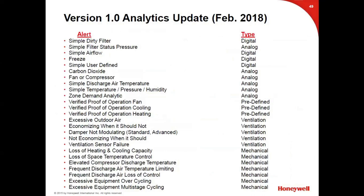These analytics were released in February 2018. Examples include: economizing when it should not, damper not modulating, not economizing when it should, excessive equipment over-cycling, and frequent discharge error or loss of control. You can configure the alert message that the technician receives. In May 2018, additional updates were released — when updates occur, there's no re-download required. The update gets pushed to the cloud and it's done, with no need to revisit the job site.